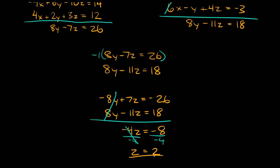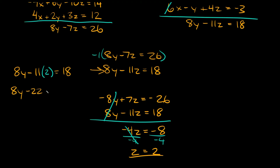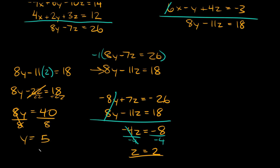Now that we know z equals 2, we plug it back into one of the equations that has a z in it to find y. Let's plug it into 8y minus 11z equals 18. Substituting z equals 2, we get 8y minus 22 equals 18. So 8y equals 40. Dividing both sides by 8, we get y equals 5.